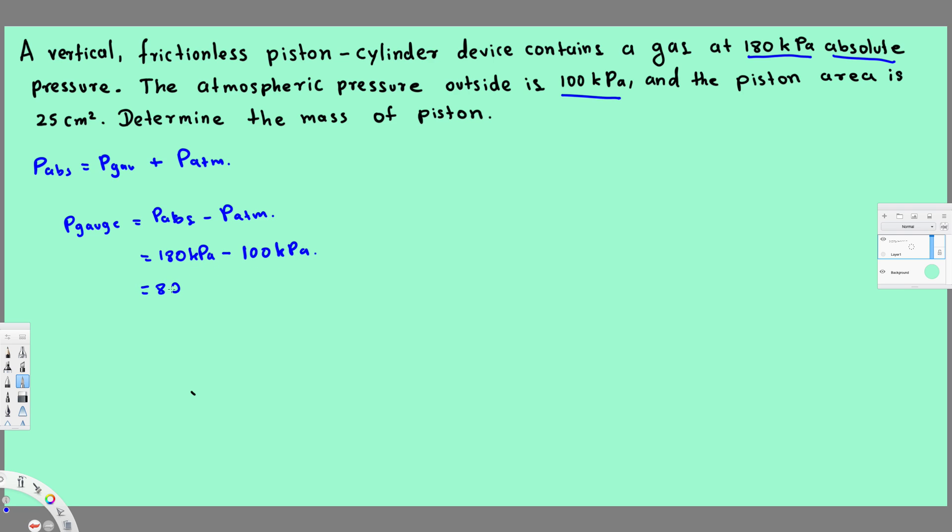That's going to give us 80 kilopascal. So this is our gauge pressure. Now the question is asking to find the mass of the piston. We have the pressure: pressure equals F over A. The force is important to us, that's what we are going to equalize to mg.